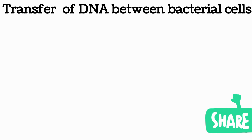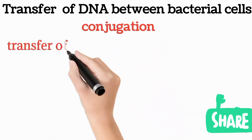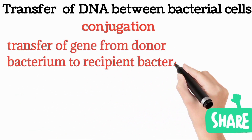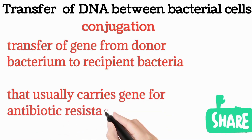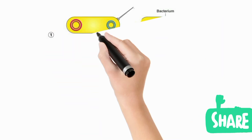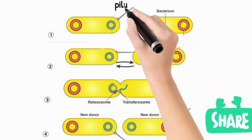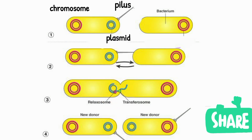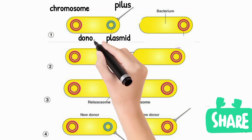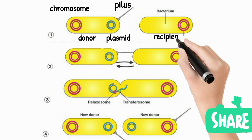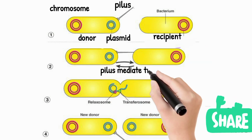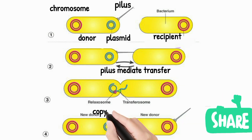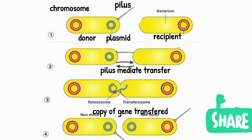Transfer of DNA between bacterial cells can occur by multiple processes. One process is conjugation, in which transfer of a gene from a donor bacterium to a recipient bacterium occurs, giving antibiotic resistance properties to the recipient bacteria. The donor bacterium has a special fertility plasmid and produces pili, which mediate attachment. A copy of the gene is made and transferred via pili from the donor to the recipient bacterium.